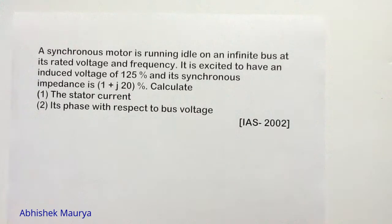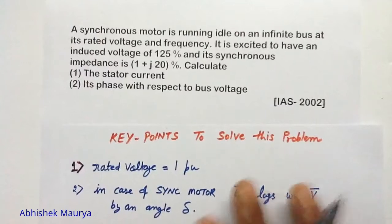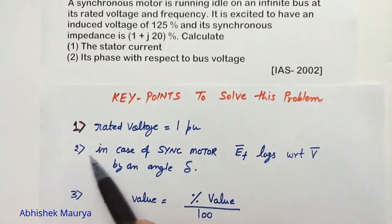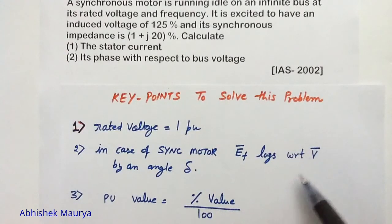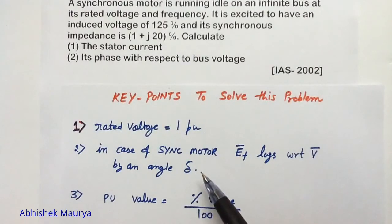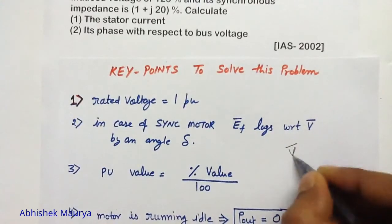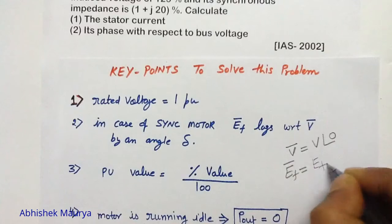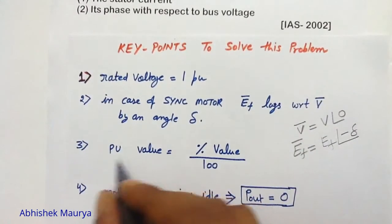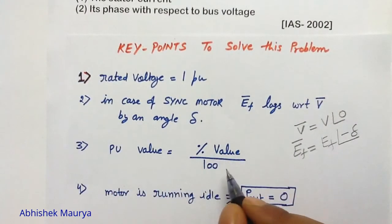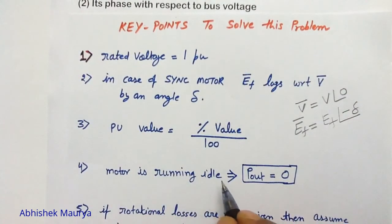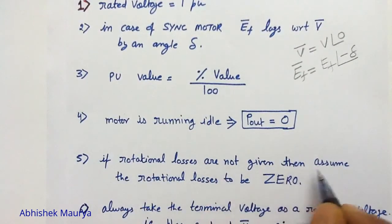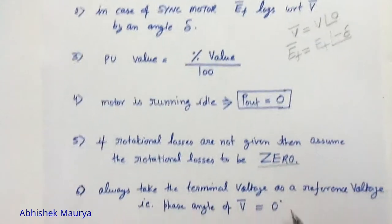Let me remind you of some key points to solve this problem. First: rated voltage equals 1 per unit. Second: in the case of a synchronous motor, the excitation voltage always lags the terminal voltage by an angle delta, called the load angle — so if terminal voltage is V angle 0, write excitation voltage as EF angle minus delta. Third: per unit value equals percentage value divided by 100. Fourth: if the motor is running idle, mechanical power output is 0. Fifth: if rotational losses are not given, assume rotational losses to be 0.